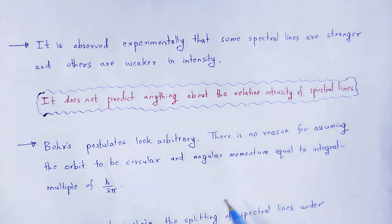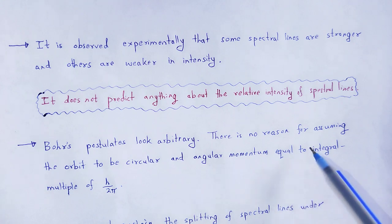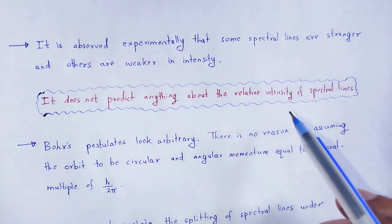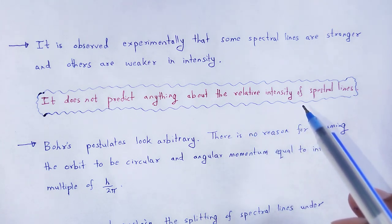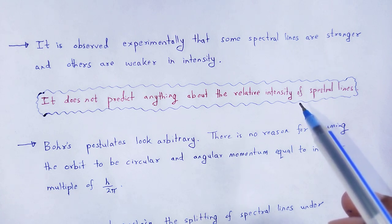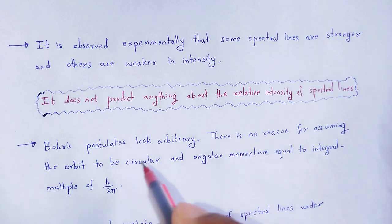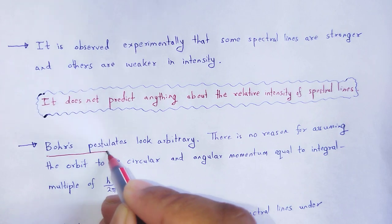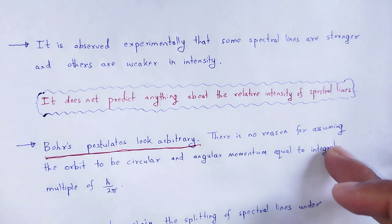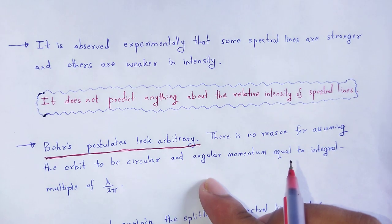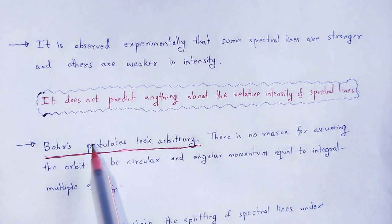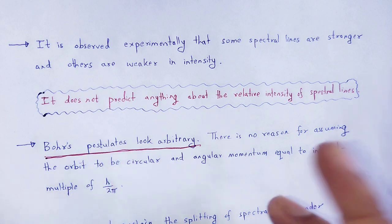Next limitation: one of the postulates according to Bohr states that electrons revolve around the nucleus in certain permitted orbits, and these orbits are defined such that the angular momentum of that electron is an integral multiple of h/2π. But according to Bohr's postulate, that assumption looks arbitrary — there is no reason for assuming the orbit to be circular and the angular momentum equal to an integral multiple of h/2π. So that is another limitation of Bohr's theory.